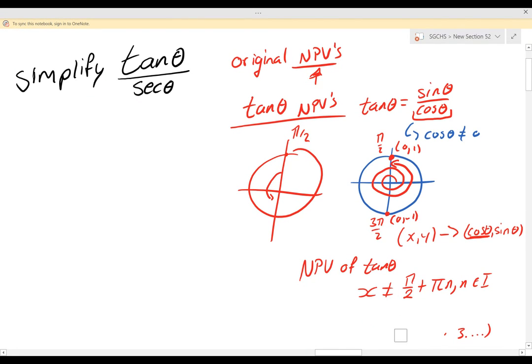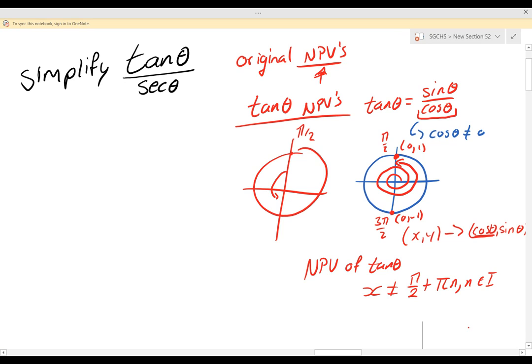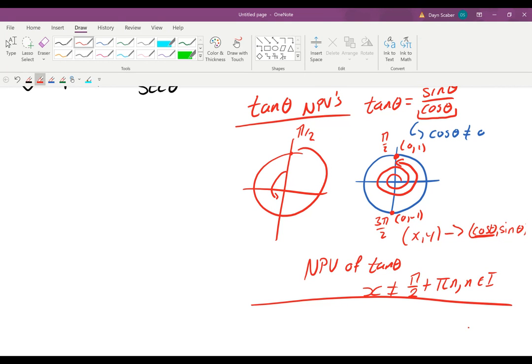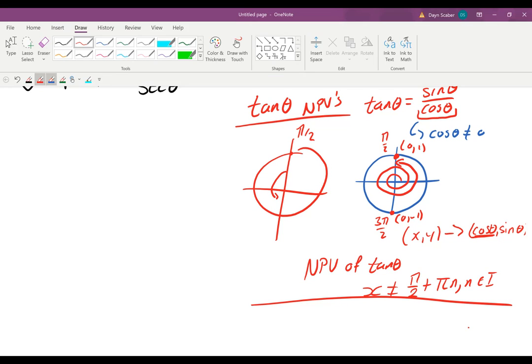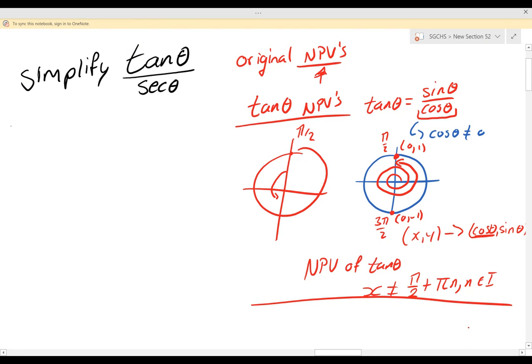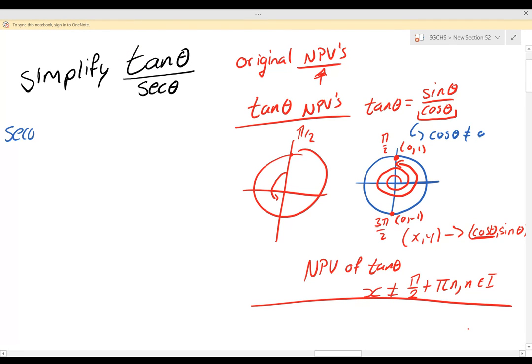Okay so now we found the non-permissible value for tan, what about secant? So secant we're going to use a quotient—or sorry, a reciprocal identity. So if we focus on our secant identity, sec θ equals 1 over cos θ.